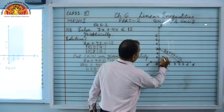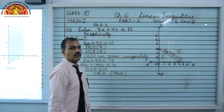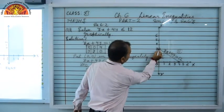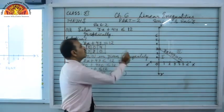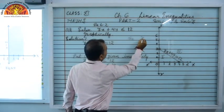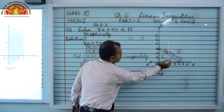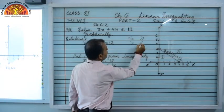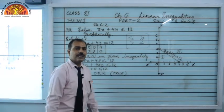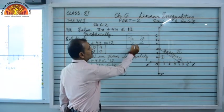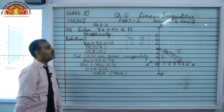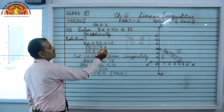Since the inequality is true at origin, the first part — the origin side — will be shaded. We draw a dark bold line because the inequality sign is ≤ (less than or equal to). When you have ≤ or ≥, draw the dark line. When you have strictly < or >, draw a broken line.